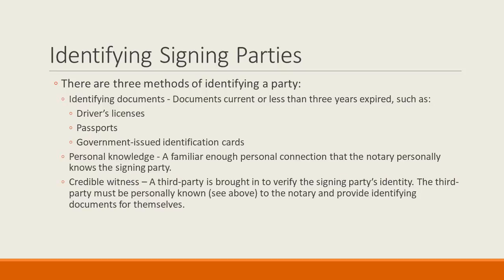Identifying documents are the most common way to identify a signing party's identity, where you can identify the signing party's identity by looking at some document that confirms who they are. Samples of these documents include a driver's license, a passport, or other government-issued ID card. Other documents may be allowed if they properly confirm the individual's identity through a photo, a signature, and/or the party's name. You should pay attention to the expiration date of the document. You can accept identifying documents that are current or less than three years expired.